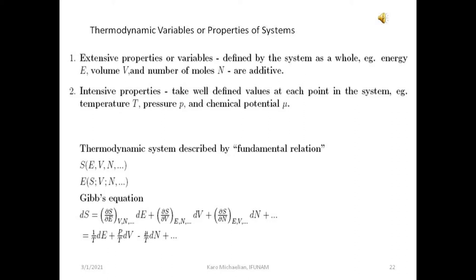There are also what are called intensive properties, and these take on well-defined values at each point in the system. For example: the temperature, the pressure, and the chemical potential. Normally these variables have only one value — when the system is in equilibrium, the temperature throughout the system is constant and uniform, and the pressure and chemical potential are also constant. These are intensive variables which take on well-defined values at each point within the system.